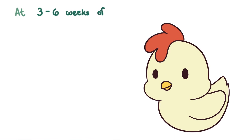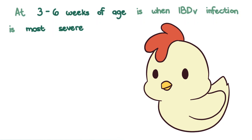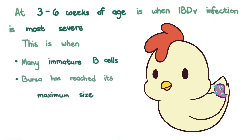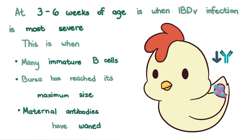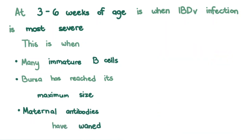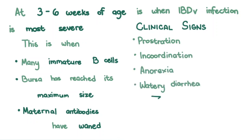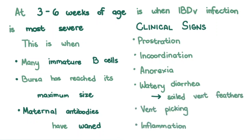At three to six weeks of age, however, is when IBDV infection is most severe. This is when there are many immature B cells in the cloacal bursa, the bursa has reached its maximum size, and maternal antibodies have waned. After a two to four-day incubation period, chickens may show signs of prostration, incoordination, anorexia, watery diarrhea leading to soiled vent feathers, vent picking, and inflammation of the cloaca.